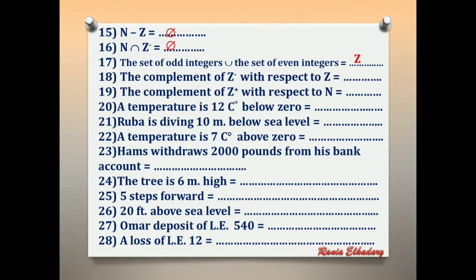Number 18: complement of Z negative with respect to Z. What is the element that, if added to Z negative, we get Z? We will add the natural numbers to Z negative to get Z. The answer is N.